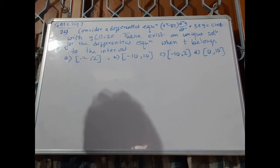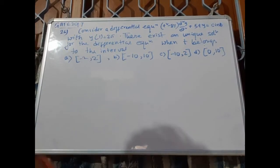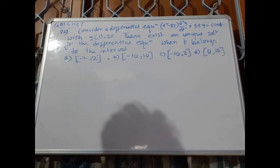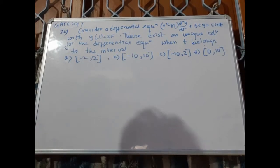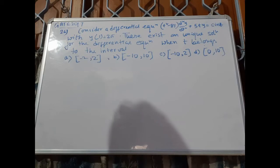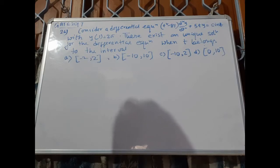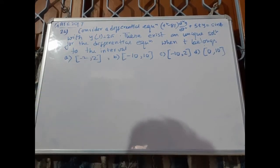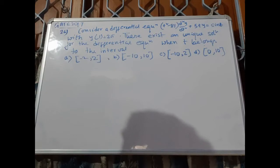This is problem number 26 of GATE 2017. Consider the differential equation: t squared minus 81 times d²y/dt² plus 5t·y equals sin(t), with y(1) equals 2π. There exists a solution for this differential equation when t belongs to the interval: option A: (-2, 2), option B: (-10, -2), option C: (-10, 2), option D: (0, 10).